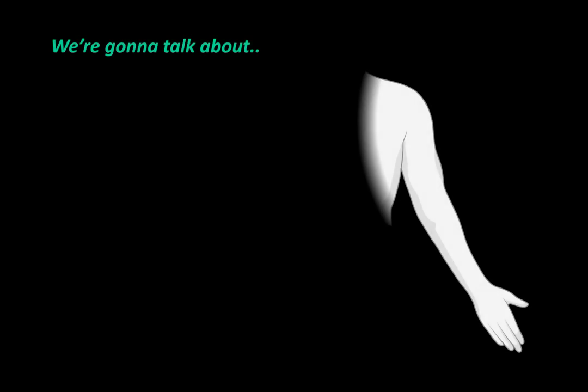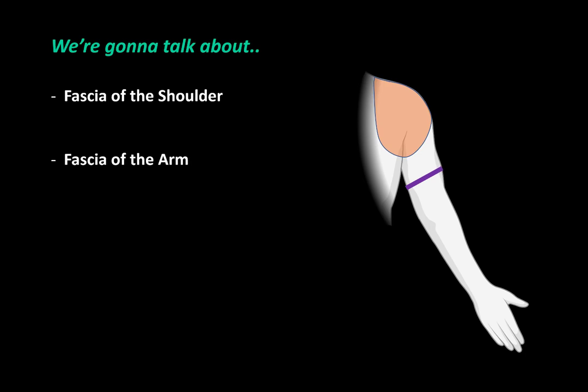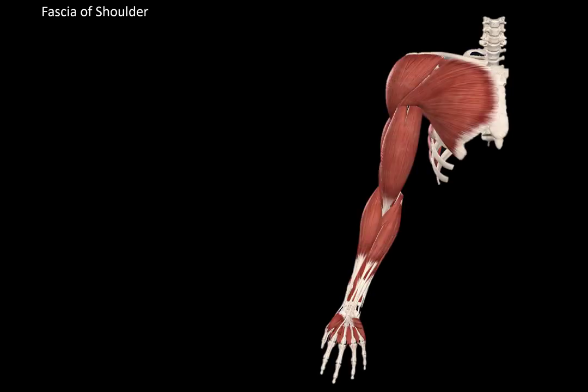In this video, we're first going to look at the fascia of the shoulder, then make a cross section of the arm and cover the main fascias there, then cover the fascia in a cross section of the forearm, and do the same with the hand. Here we see all the muscles of the upper limb. The fascias of the shoulders aren't that complicated as they don't form any significant compartments like they do in the rest of the upper limb.